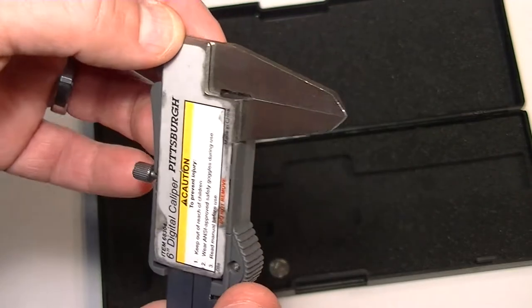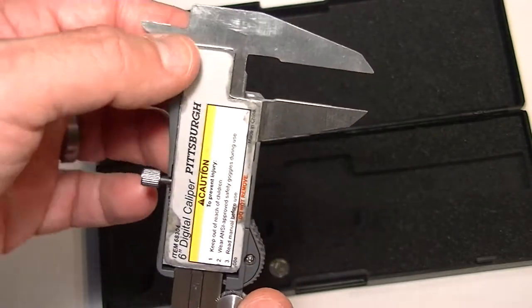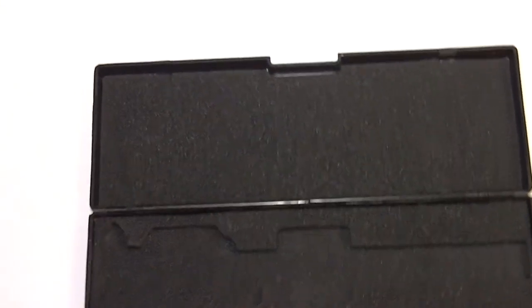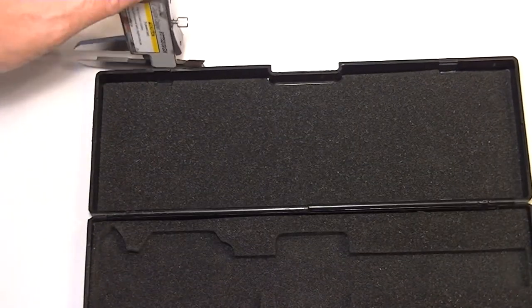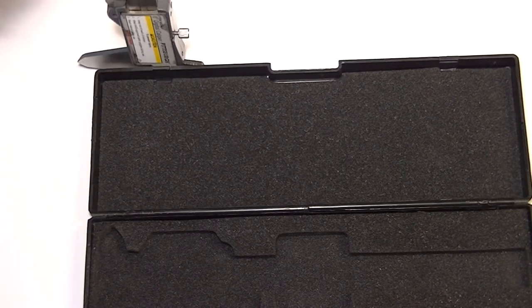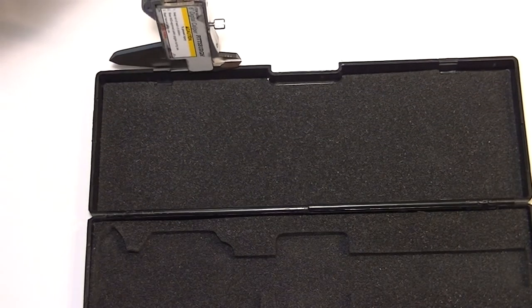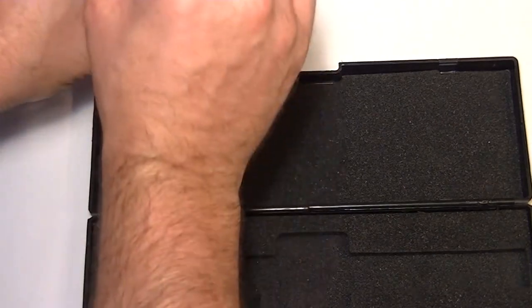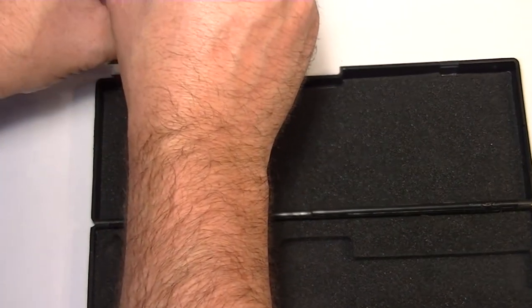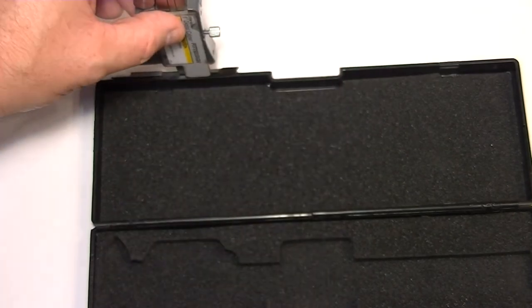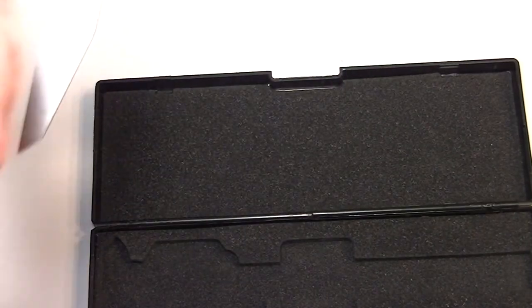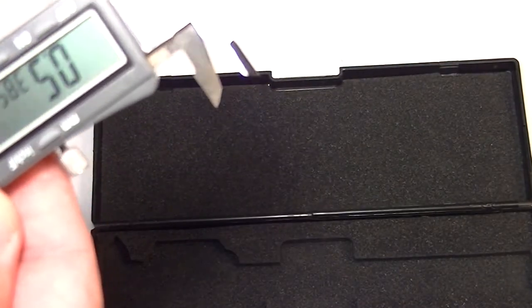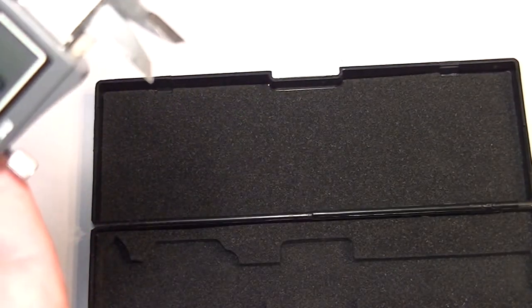You can measure depth just by, depth of an edge just by holding the edge on here as such. So if you want to measure the edge of that to the bottom, put it on a flat surface and do it like that. That little edge will show you the depth which is 0.5 inches, half an inch.